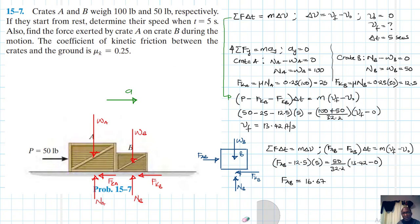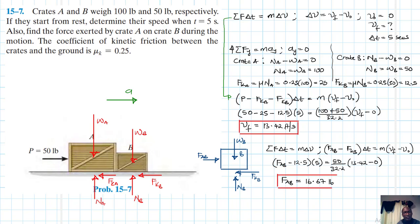We have found the final velocity after 5 seconds and the force exerted by crate A on crate B, which by Newton's third law is the same magnitude as the force exerted by crate B on crate A. I hope this video was helpful — give it a thumbs up, like, subscribe, and share the channel. See you in the next video!